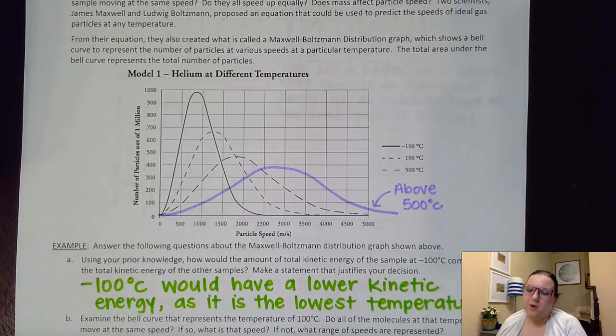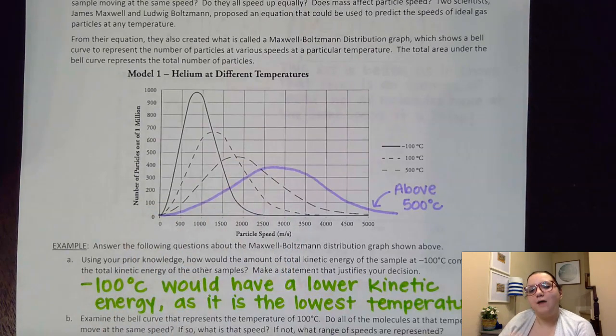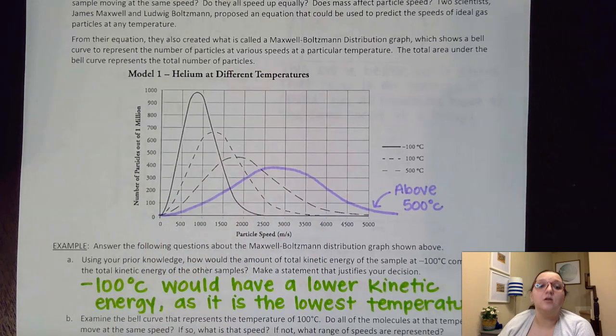except that here we are keeping the area underneath these the same and so we do have the same number of particles with each of these graphs. But in order to get those increased averages, those increased speeds for the peaks, what we're having to do is stretch out and flatten that graph in order to ensure that the area underneath the graph is remaining consistent for all three of those curves.